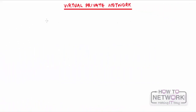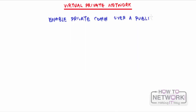So we are now ready to take on virtual private networks, which is VPNs for short. What is a VPN? A VPN is just a means to enable private communication — say communication between two branches or between a branch and a headquarters — over a public infrastructure. A public infrastructure could be something like the internet.